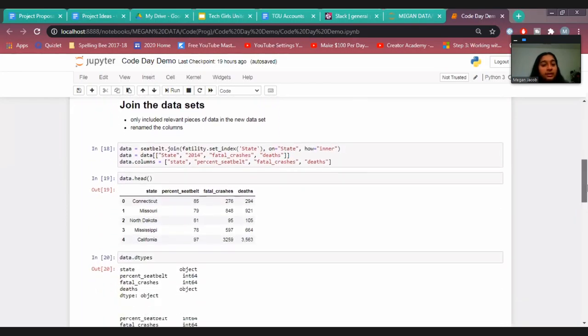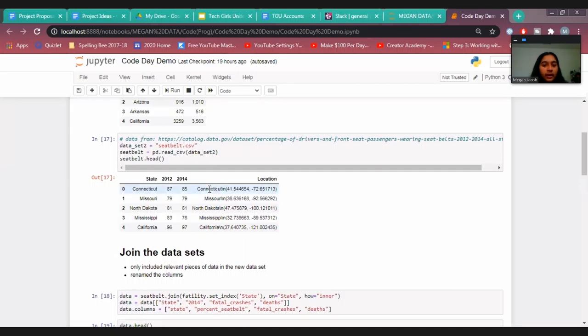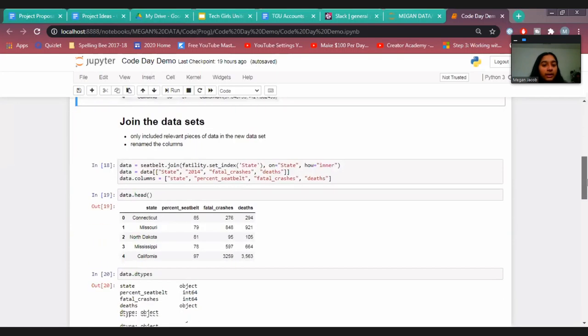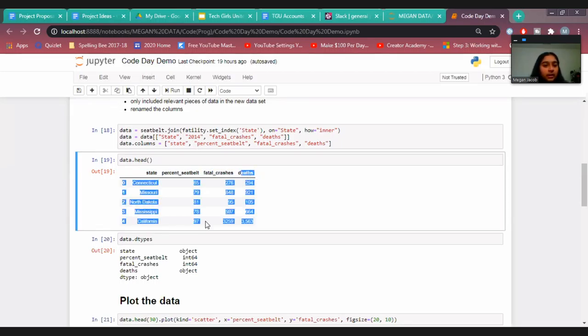And then in this step, what I did is I joined the two data sets together, only joining the parts of the data set that I wanted. Because as you can see here, there were some other pieces of data that I did not need for this particular use case. So I didn't include that. Instead, what I included was the percent of people using seat belts in 2014, the number of fatal crashes and the deaths. And also what I did is I also renamed the 2014 column in the previous data set as percent using seat belt.